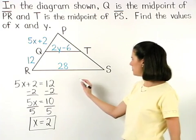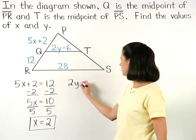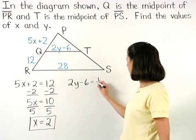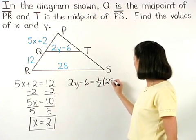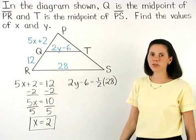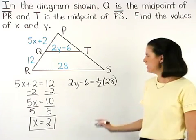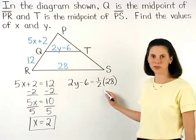Or 2Y minus 6 equals half of 28. Simplifying on the right side, half of 28 is 14.